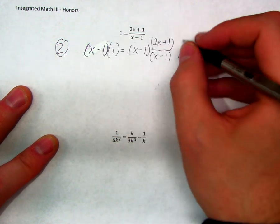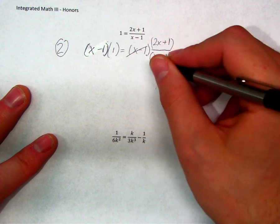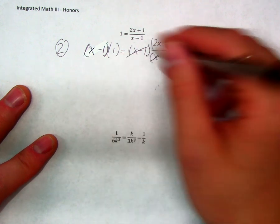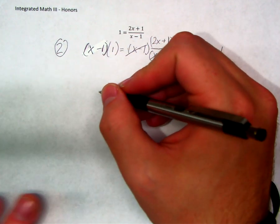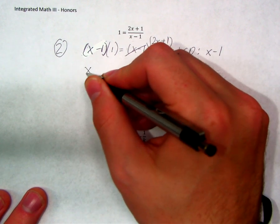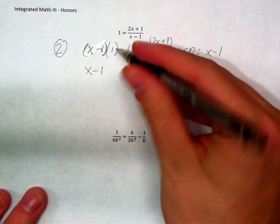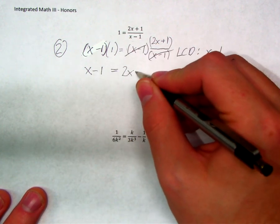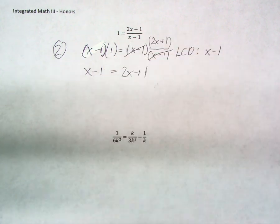I can cancel this x minus one with the other x minus one because one is being multiplied and the other is being divided, so they cancel. That's the whole point of multiplying both sides by the least common denominator — so that you can cancel. One times anything is itself, so that side simplifies to x minus one. I've got x minus one is equal to two x plus one.